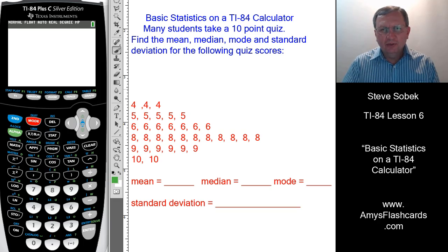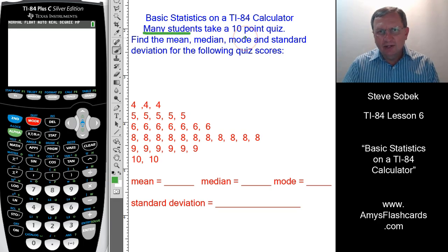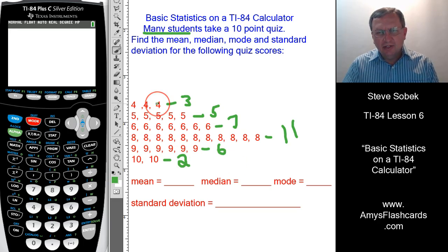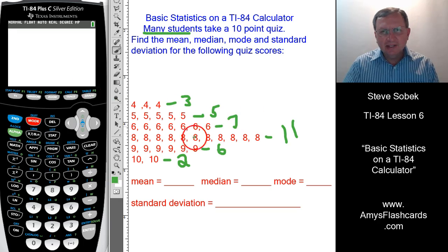Here's example number two. This time we have many students taking this 10-point quiz. We've got three students who scored a four, five students who scored a five, seven students who scored a six, 11 students who scored an eight, six students who scored a nine, and two students who scored a 10. You might be looking at that and saying, wow, that's going to be cumbersome to have to type in all of these data values. Well the good news is, you don't have to. Pick up your calculator and take along with me.